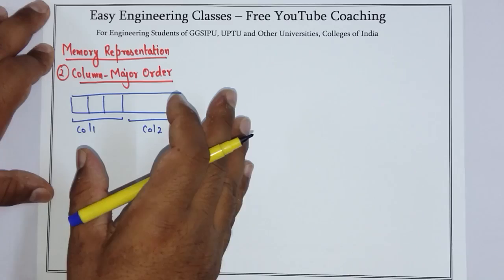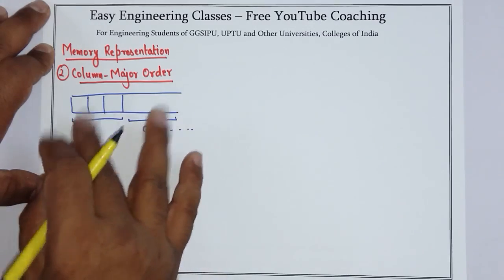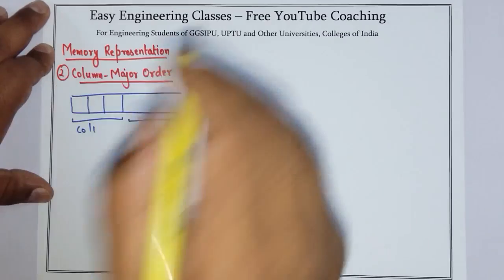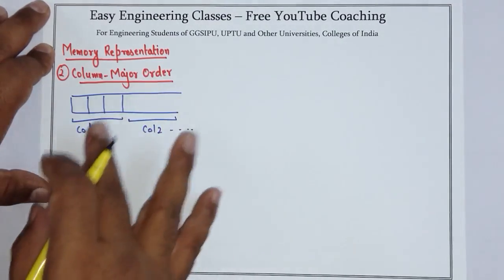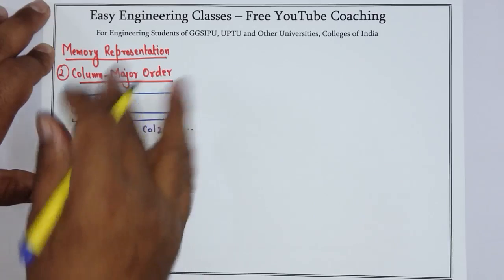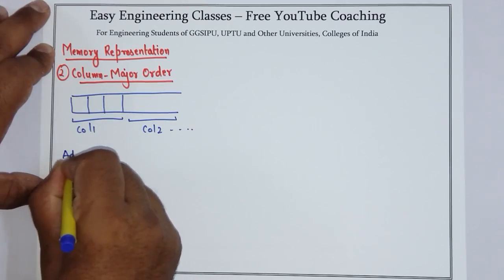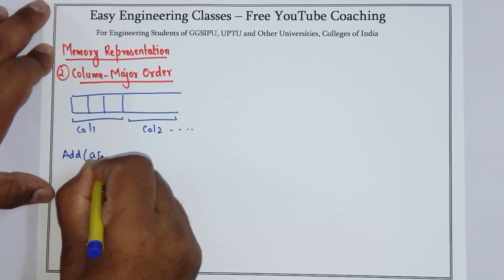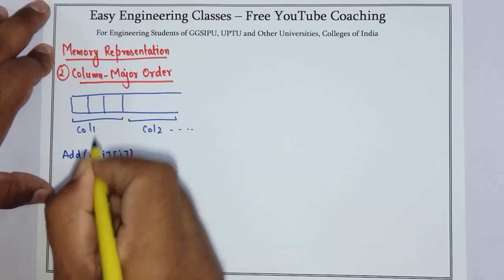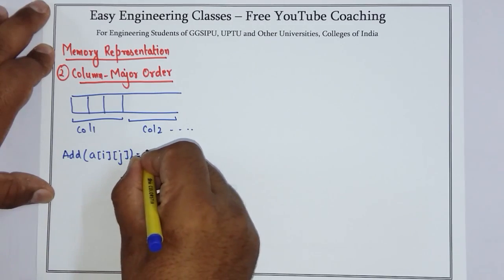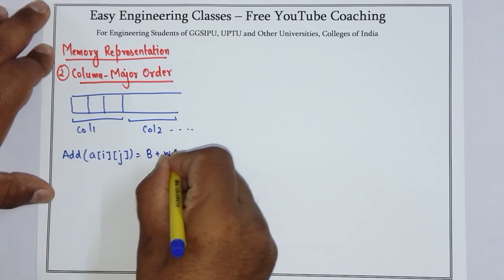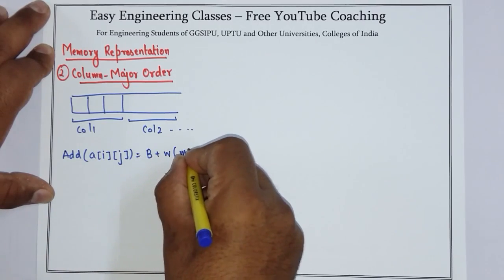Opposite to row major order, column values are stored first here. The formula for calculating the address of an element in column major order is given by: address of element a[i][j] equals base plus w times m times (j minus l2) plus (i minus l1).